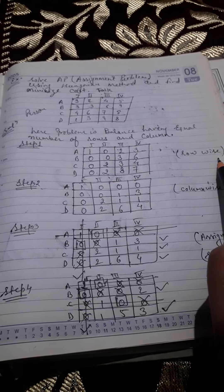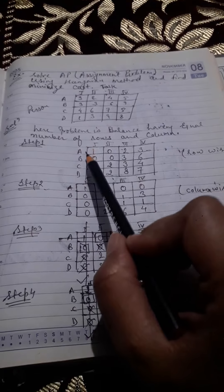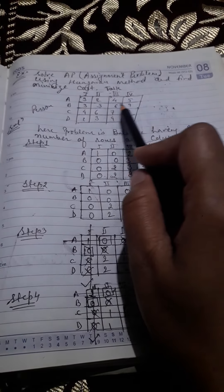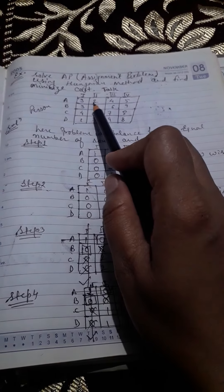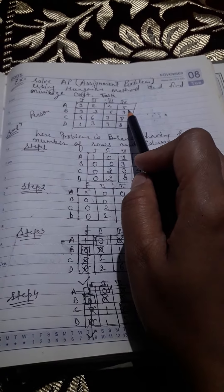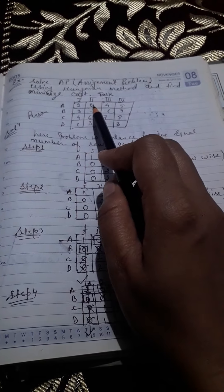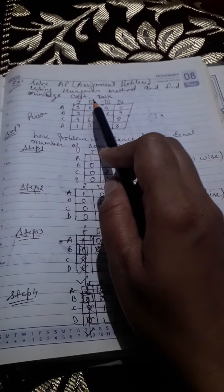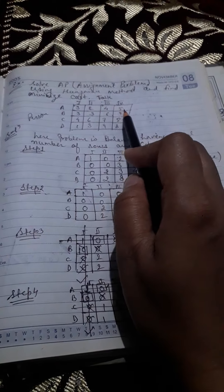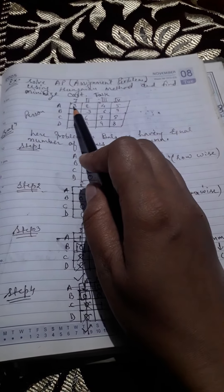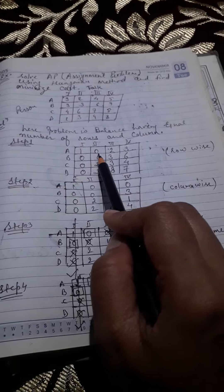Step one is row-wise reduction. From each row, select the least number and subtract it from each element of that row. From the first row, select the least number which is two, and subtract two from each element — that is, from three, two, four, and five — and you will get one, zero, two, three.